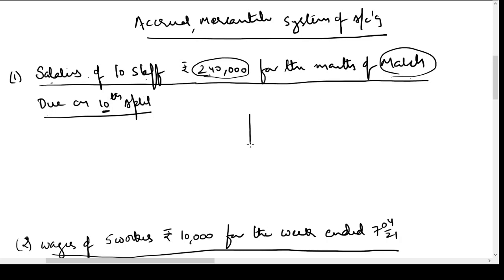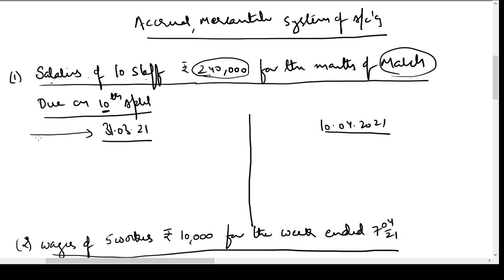Now the question arises: when should the transaction be recorded — on 31st March or on 10th April? The 31st March is the day on which they have earned their salary for the month of March, and 10th April is the due date, the date on which they can demand payment. The business has enjoyed their services in the month of March, for which the business owes the workers 2,40,000. But legally, payment is required only on 10th April. So when should we recognize this 2,40,000 as an expense?